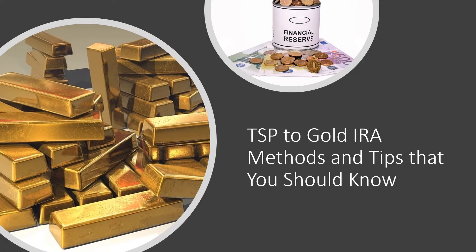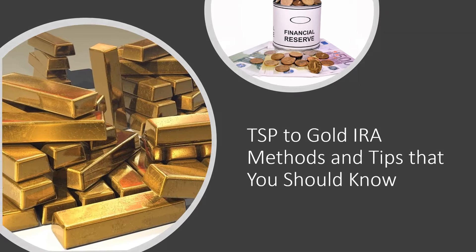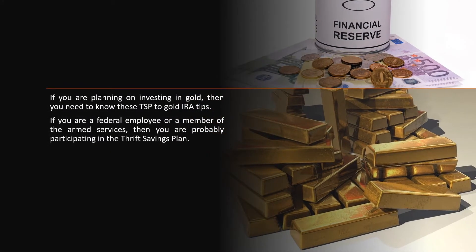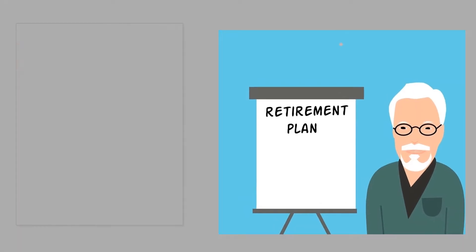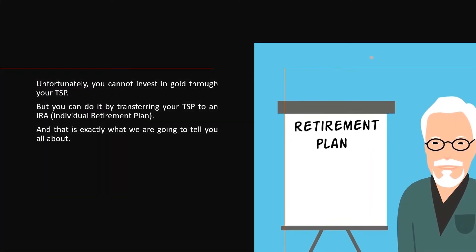TSP to Gold IRA: Methods and Tips That You Should Know. If you are planning on investing in gold, then you need to know these TSP to Gold IRA tips. If you are a federal employee or a member of the armed services, then you are probably participating in the Thrift Savings Plan, a retirement plan that allows you to transfer some of the money from your paycheck to several retirement funds in the plan. You cannot invest in gold through your TSP, but you can do it by transferring your TSP to an IRA, Individual Retirement Plan, and that is exactly what we are going to tell you all about.